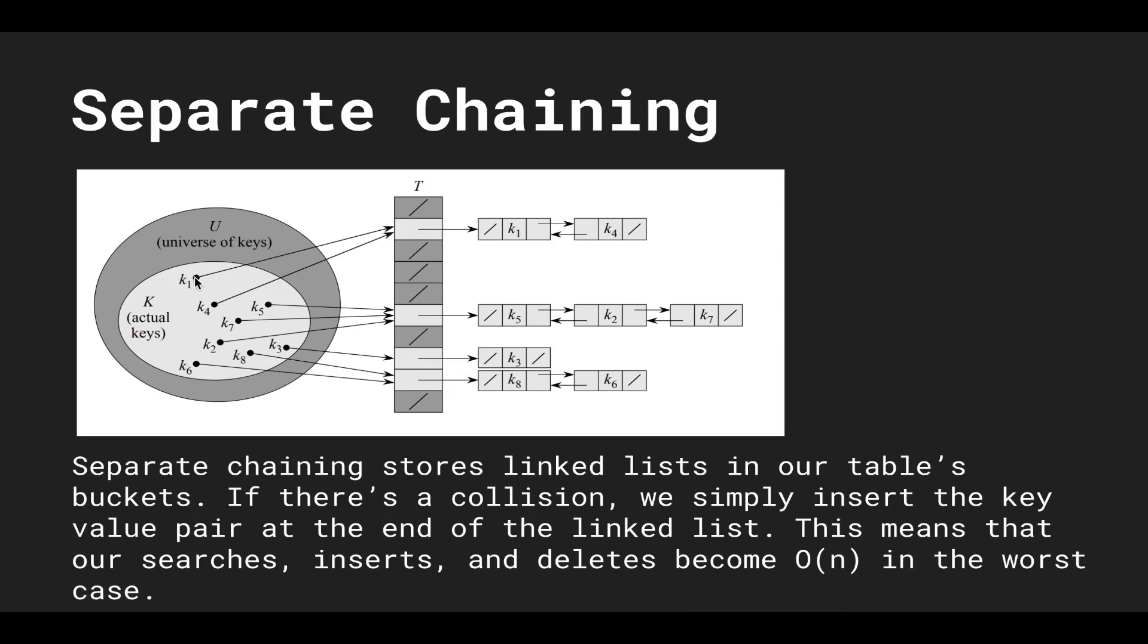So let's say I wanted to insert k1 first. I insert k1 to the linked list. Later on down the road I want to insert k4 and k4 hashes to the same value or same index as k1. So this is a collision. So all we do is insert k4 to the end of the linked list.